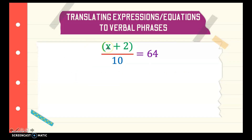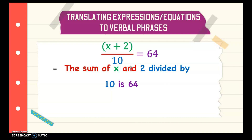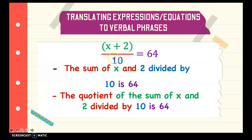Last one: (x + 2) divided by 10 is equal to 64. You can say it as the sum of x and 2, divided by 10, is 64. You need to perform first whatever is in the numerator or the dividend. So we have x plus 2 — we need to get the sum of x and 2, then divide it by 10, that is equal to 64. You can also say the quotient of the sum of x and 2, divided by 10, is 64.